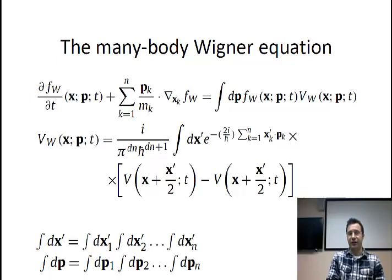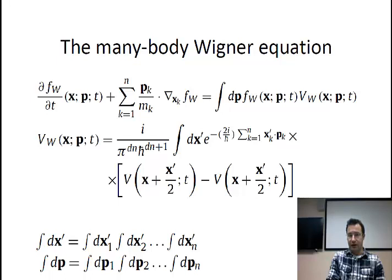The many-body Wigner equation is this equation that you find here in this slide. You can see that formally the expression is not any different than the single-body Wigner equation. The only difference is that now your phase space is a 6 times n dimensional space, where n is the number of particles. So this is an incredibly huge phase space. The momentum p written as a vector is not the momentum of a single particle — this is the momentum of every particle involved in your system, so this is essentially a 3 times n vector.